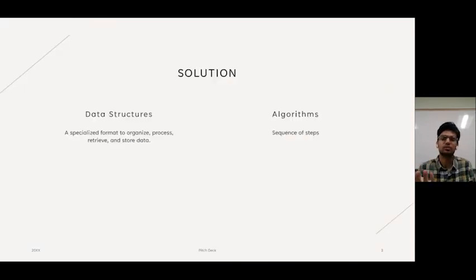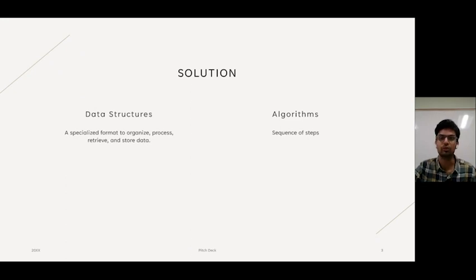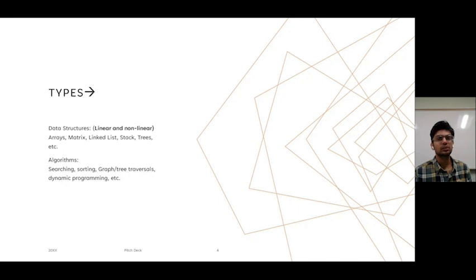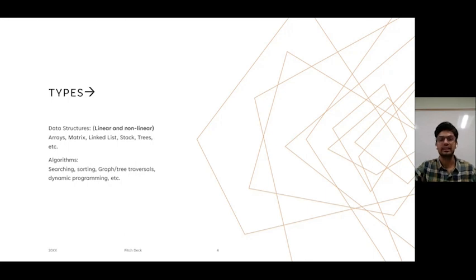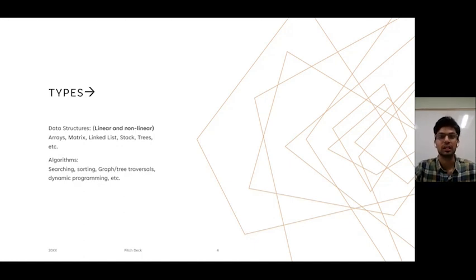Data structures are like a specialized format which stores, retrieves, and processes your data. And algorithms are basically a sequence of steps which we follow. There are many types of data structures and algorithms — linear and non-linear data structures, and then stack, queue, arrays, linked lists, et cetera. And popular algorithms include searching, sorting, graph and tree traversals, and dynamic programming.